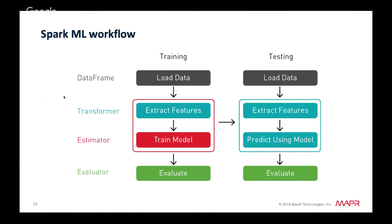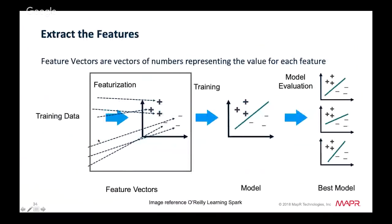Spark machine learning provides a set of APIs built on top of DataFrames for machine learning workflows. We'll use a transformer to transform a DataFrame into another DataFrame with a features vector, then use an estimator to train on the DataFrame and produce a model. Features must be transformed into feature vectors — vectors of numbers representing the value for each feature.